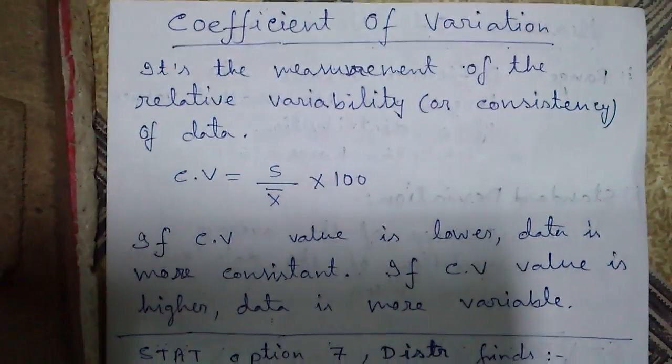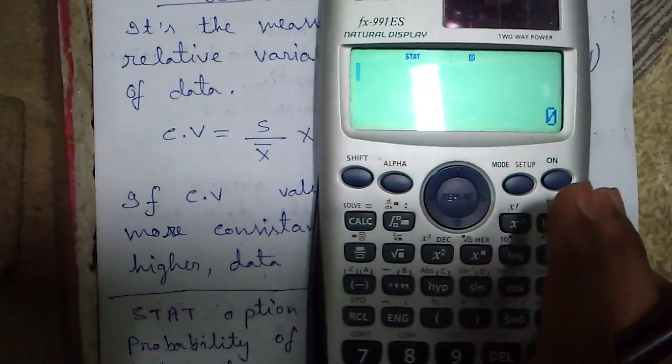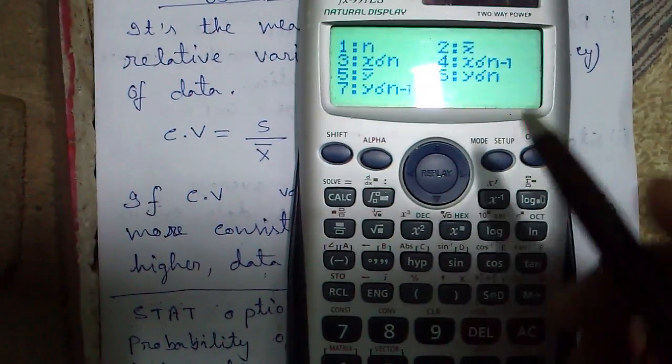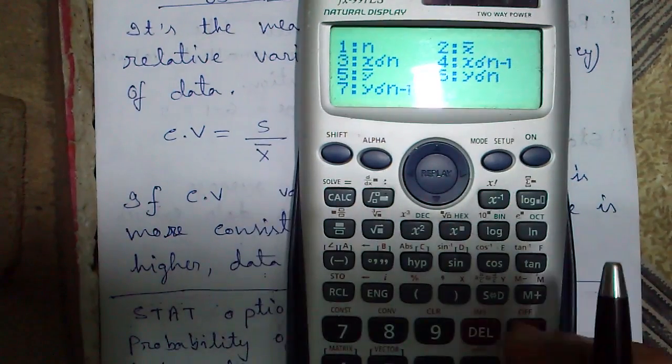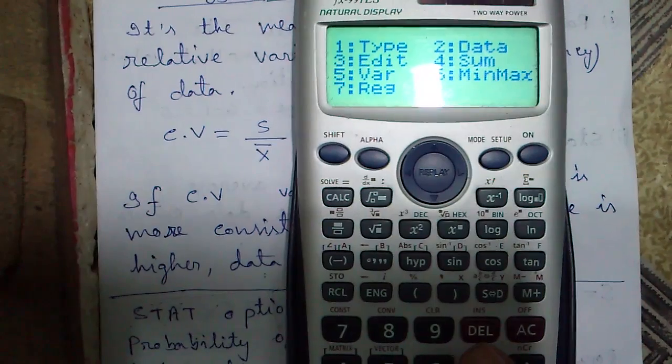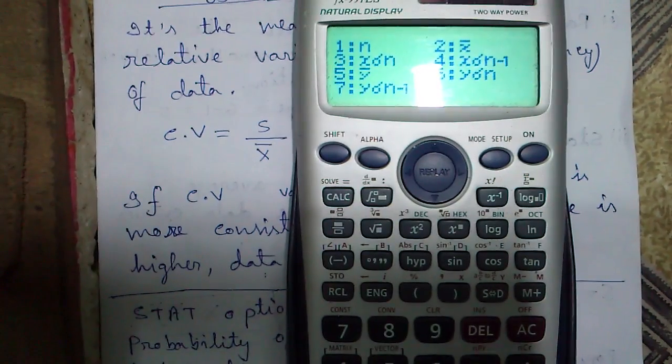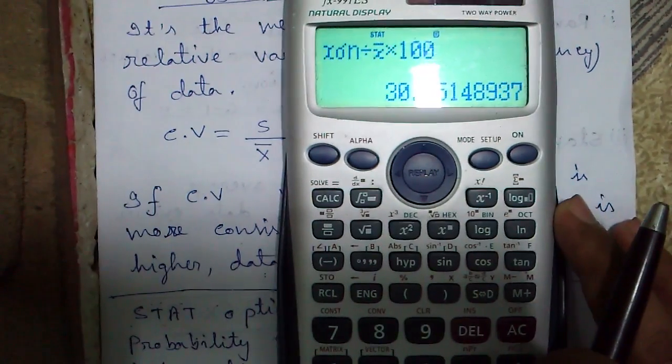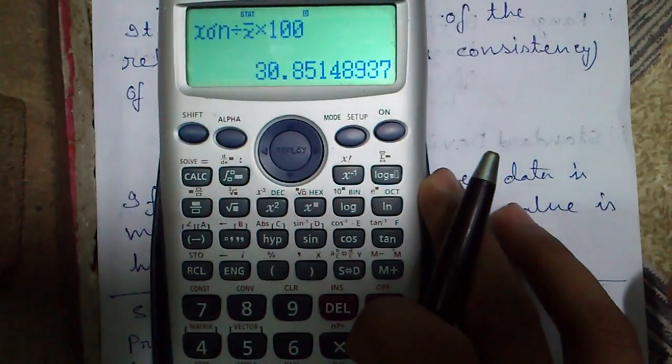Let's find out coefficient of variation for x first. It is given by standard deviation of x divided by mean of x times 100. It is 30.85 for x.